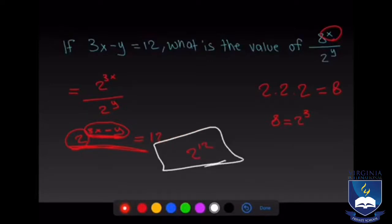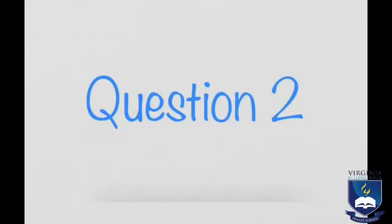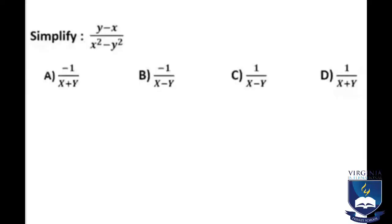That's all for the first problem. Now simplify: (y minus x) over (x squared minus y squared). The answer choices are: A) negative 1 over x plus y, B) negative 1 over x minus y, C) 1 over x minus y, D) 1 over x plus y.